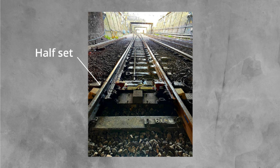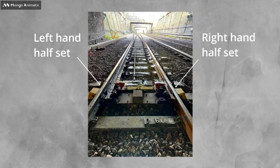When we talk about switches we often refer to left and right hand sides. But how do we know which is which? The answer is to stand at the front of the switches. The half set on your left is the left hand half set. The half set on the right, the right hand half set.